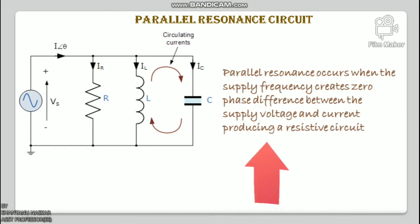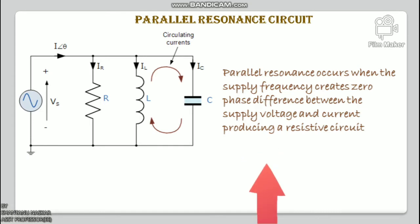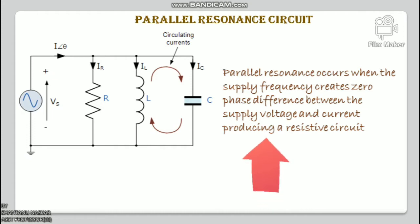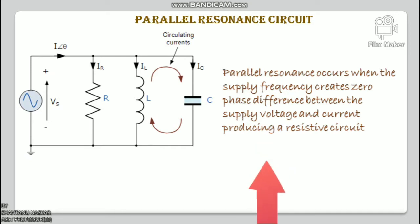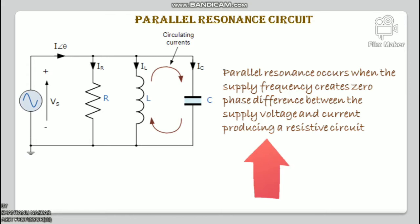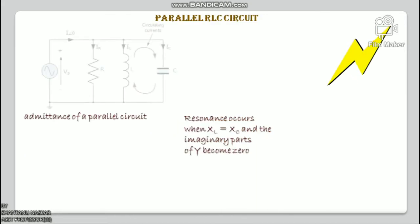The difference, however, is that a parallel resonance circuit is influenced by the current flowing through each parallel branch. Within the parallel LC tank circuit — a tank circuit being a parallel combination of LC used in filter networks to select or reject AC frequencies — we now consider the parallel RLC circuit.